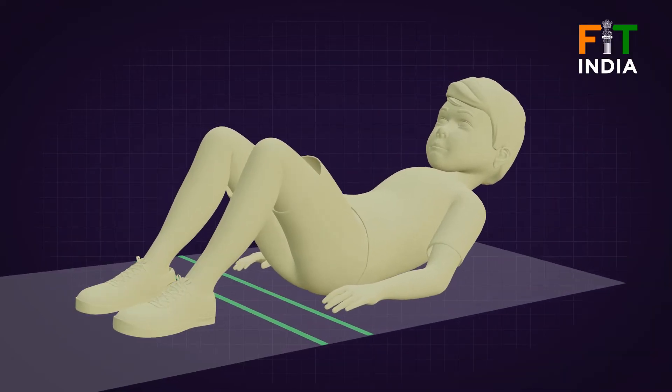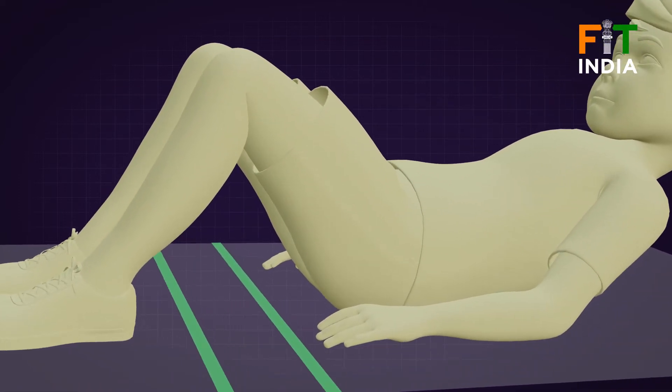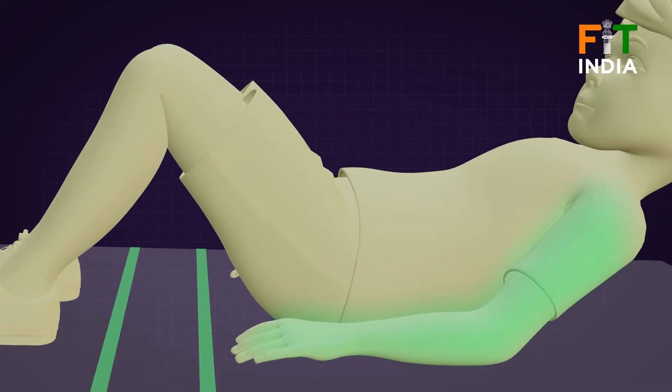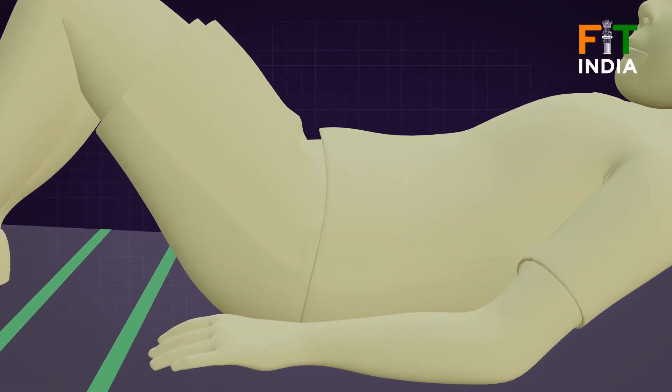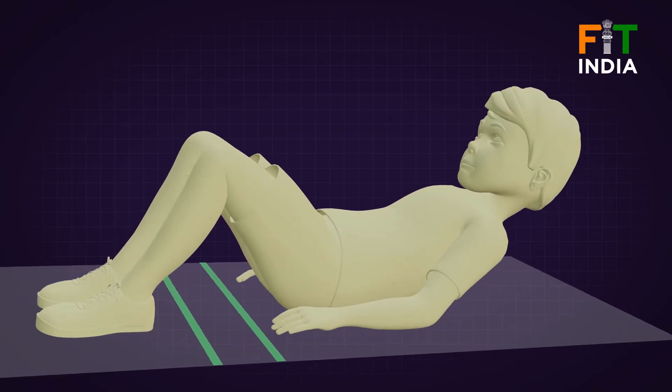The subject lies on a cushioned, flat, clean surface with knees flexed, usually at 90 degrees, with hands straight on the sides, with palms facing downwards. The arms should be closer to the ground and parallel to the body.